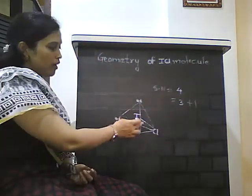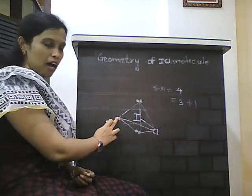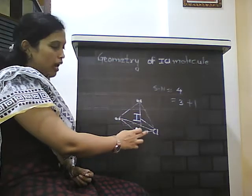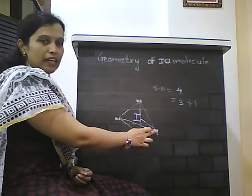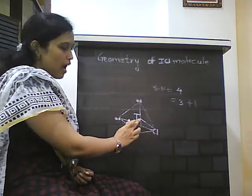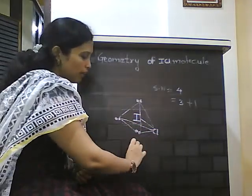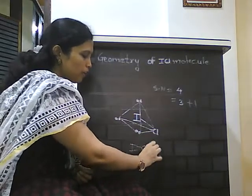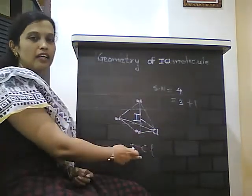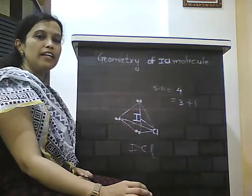As in this tetrahedron, 3 positions are occupied by lone pairs and on one side, the bonding pair is there. Therefore, the I and Cl atoms are present in one line. The geometry of ICL molecules is linear geometry with bond angle 180 degrees.